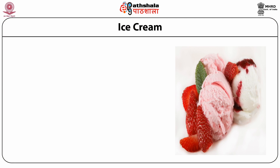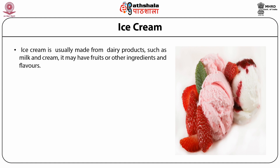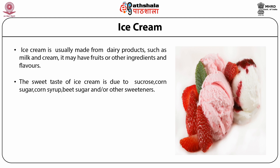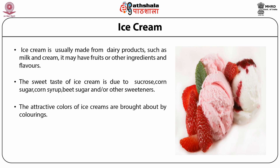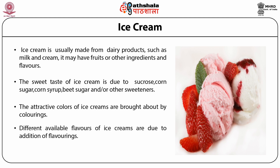The last milk product is ice cream. Ice cream is usually made from milk and cream. It may have fruits, flavorings, colors and other substances like preservatives and emulsifiers added into it. It also contains different sweeteners like sucrose, corn syrup, cane sugar, beet sugar and/or artificial sweeteners to provide a sweet taste. We all cherish ice cream!